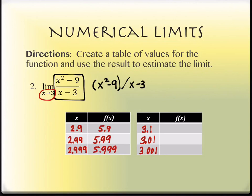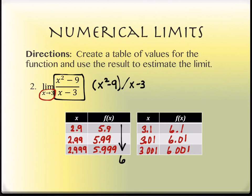For the 3.1 side, the first y value is 6.1, then 6.01, then 6.001. Again, not always going to work out so nicely. Going down the table of 2.9-ish numbers, we're getting close to 6. And going down the 3.1-ish numbers, we're also getting close to 6.